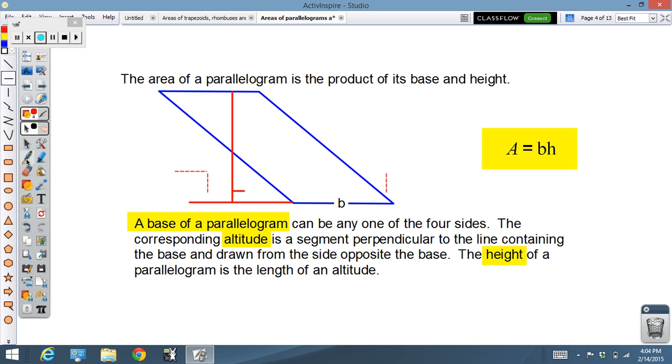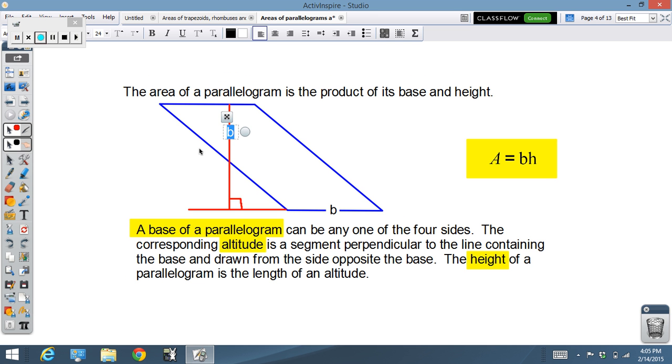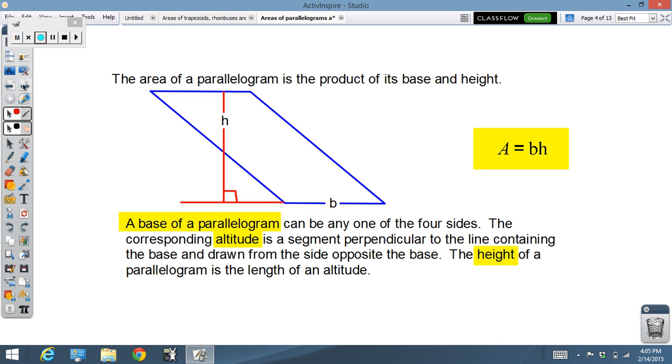In this case the base and the height are different values, but are still going to give us the same area. We didn't change the figure. We just changed what we considered to be the base and what we considered to be the height. So it's important that we're able to look at these things in several different ways. The height is the length of an altitude, which is a segment perpendicular to a line containing a base, the perpendicular distance between the two bases.